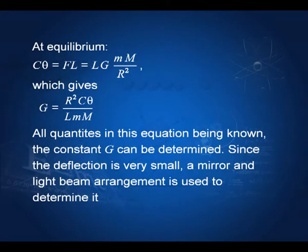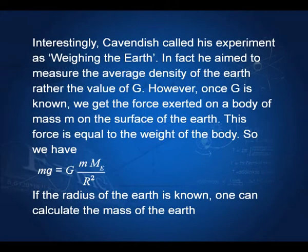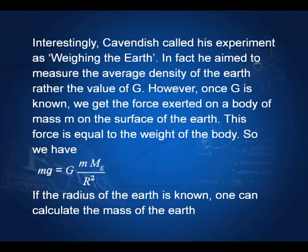Since the deflection is small, we usually use a light beam arrangement to measure it. Interestingly, Cavendish did not do this experiment to determine the value of G — his aim was to determine the weight of the earth, which is why this experiment is sometimes called 'weighing the earth.' From the equation, if the radius of the earth is known, one can calculate the mass of the earth, since G, small m, and capital R are all known.